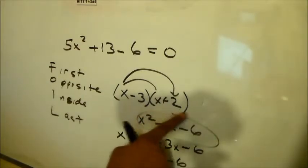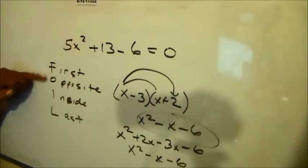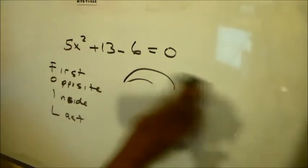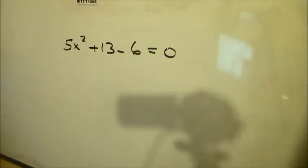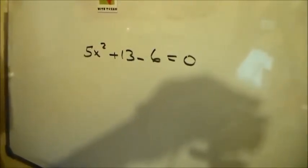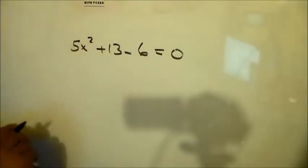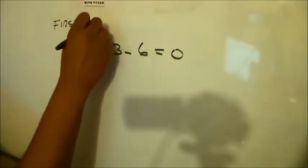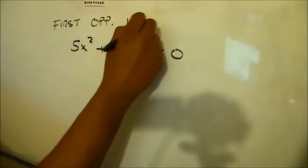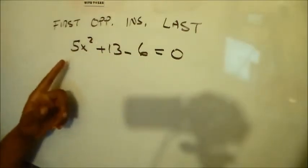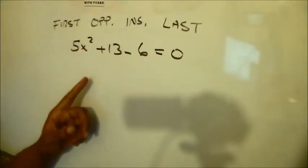So x minus 3 and x plus 2 - First, Opposite, Inside, Last - that's the concept I wanted to make sure you were aware of. Now we look at our problem and think: what did we FOIL in order to get 5x squared plus 13x minus 6? I'll write it across the top: First, OPP for Opposite, I for Inside, and L for Last. What do we FOIL to come up with this question?